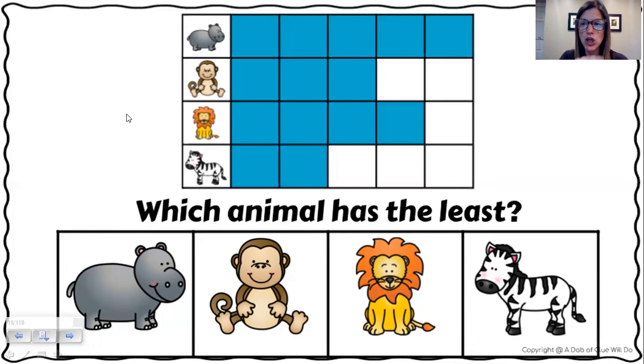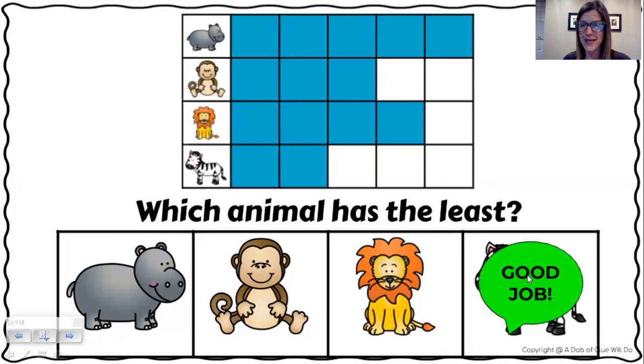If you said zebra, excellent. Zebra has only two. The monkey comes close with three. But if we're talking about least, the smallest number, two is smaller than three. So the answer of zebra would be correct.